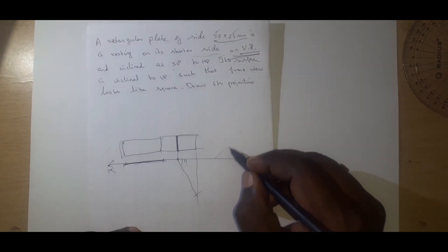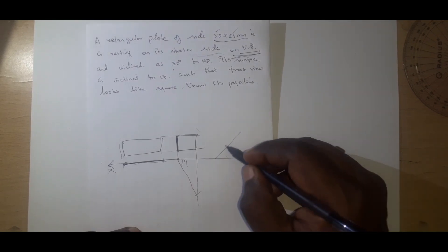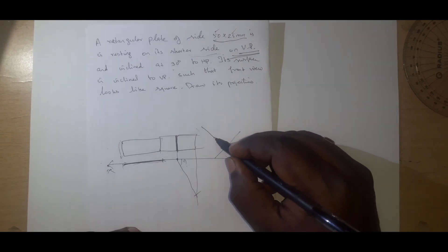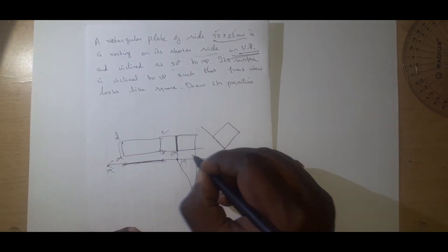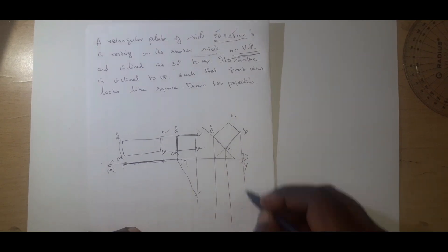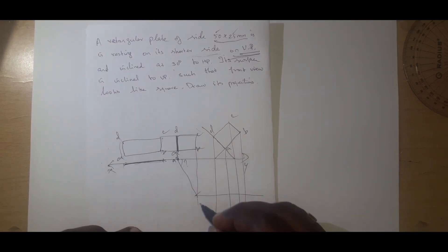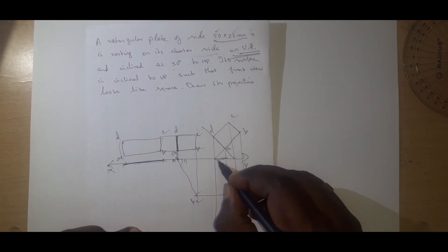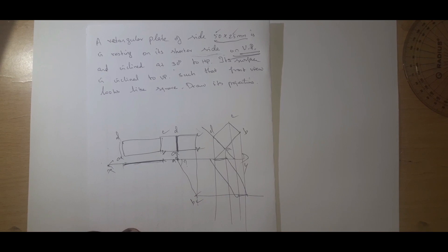We can choose either side; I choose this side. The rectangle is labeled A B C D. I will project all the points and project them here as well. This is A and D on one side, and B and C on the other. A and D will be here and B and C will be here. We draw the lines accordingly — this is the way of proceeding with this problem.